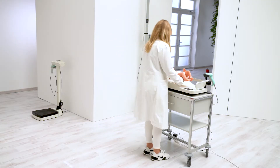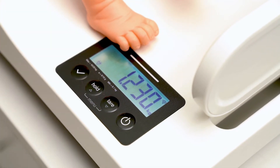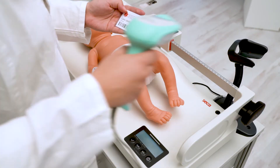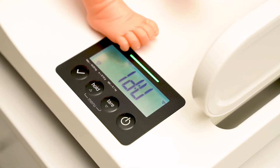The baby is placed in a secure position on the scale. The scale starts to determine the weight of the baby immediately, automatically holds the value, and confirms the stable value with a beeping sound. Simultaneously, the user can scan their ID barcode. This prepares the device to send the relevant data, which is indicated by the green LED above the display. The display of the measuring station will show this code.